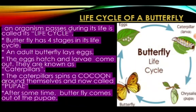Life cycle of a butterfly. The series of changes an organism passes through in its life is called a life cycle. A butterfly has four stages in its life. An adult butterfly lays its eggs. The eggs hatch and larvae come out — they are known as caterpillars.